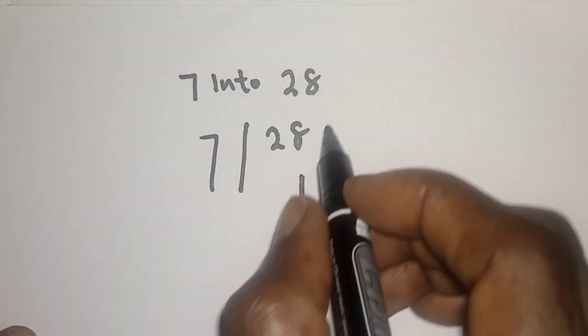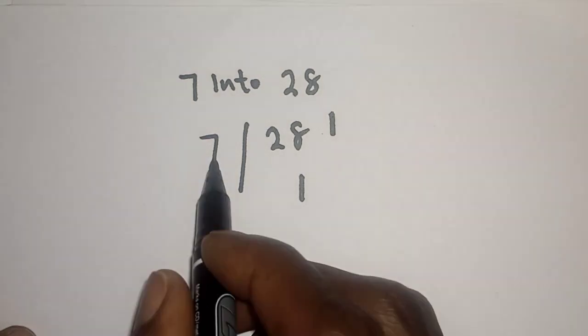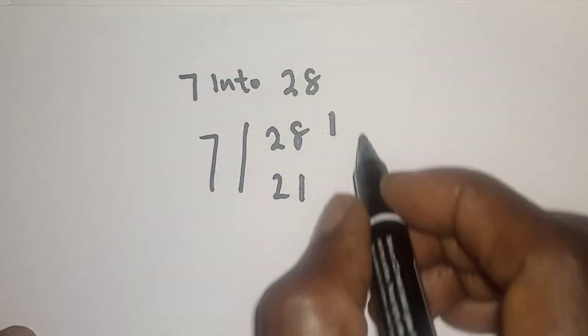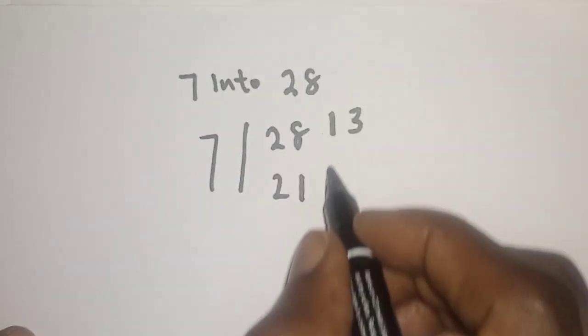Remain one, then bring down the seven. We have 28 here, this is 21. 7 into 21, that is three. So therefore...